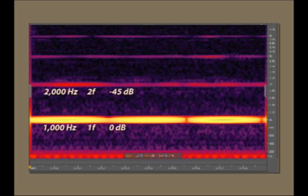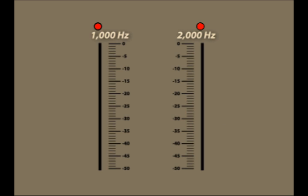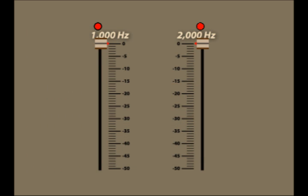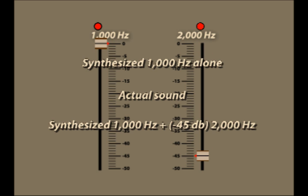In this instance, the first overtone is considerably softer than the dominant, by about 45 dB. Let's now put the principle of superposition to work. We'll keep it simple. We'll synthesize a pure tone of 1000 Hz, and another pure tone of 2000 Hz. If we mix the two tones together, this is what we get. But remember that the 2000 Hz overtone should be 45 dB softer than the dominant. If we adjust the intensities properly and mix them together, this is what we get.